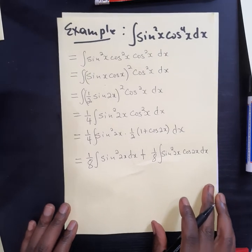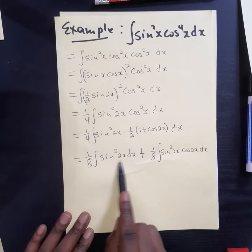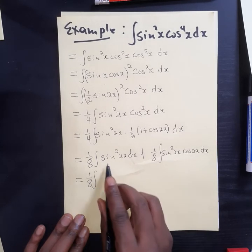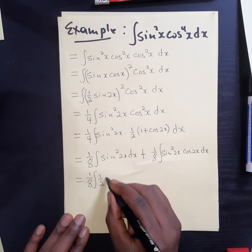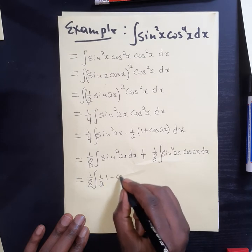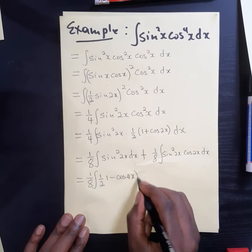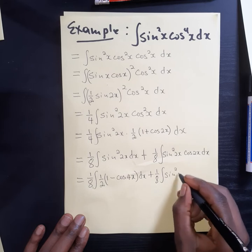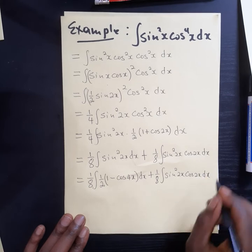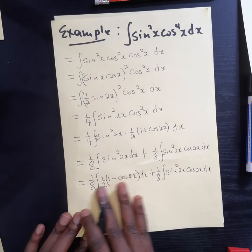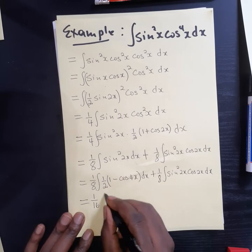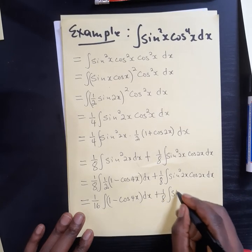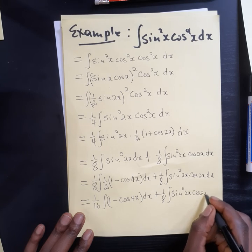And then it is easy to see that this can be integrated, but we still have a problem here. So we apply the identity again. It's 1 over 8 here, the integral. That identity will say 1 over 2. This is sine, so it will be 1 minus cosine of twice this angle, which will be 4x dx, plus 1 over 8, the integral of sine squared of 2x, plus 1 over 8, the integral of sine squared of 2x, cosine of 2x dx. And this is giving us 1 over 8, the integral of sine squared of 2x, cosine of 2x dx.